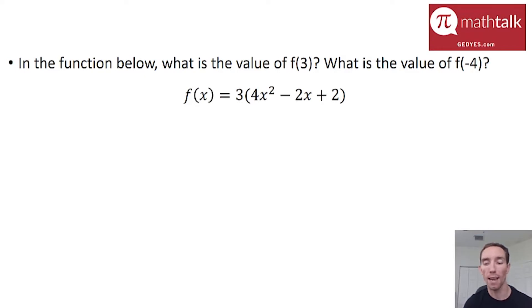So we're going to look at f(3) first. So anywhere there's an x, I'm just going to plug in the value of 3. So 4 times 3 squared minus 2 times 3 plus 2, and all of that times 3. All right, so now we need to use order of operations to simplify this down. I'm going to do inside parentheses, I'm going to do the exponents first. So 3 squared is 9.